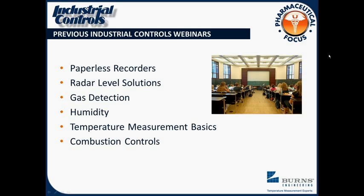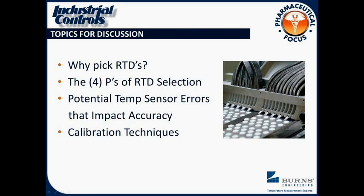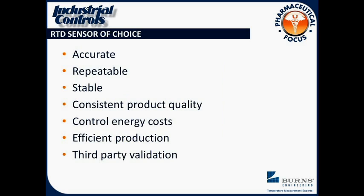I have had lots of inquiries lately about how to improve accuracy. A lot of people have been using plus or minus half a degree C as their target and they want to cut that in half now, which presents even more of a challenge. We're going to go through some of this stuff and find out what's the best way to accomplish that. The first question is why is the RTD really the best sensor for a high accuracy measurement? We're going to talk about that, show how we select the RTD, go through a lot of these sensor errors, and at the end, if we have time, we'll go through some calibration techniques.